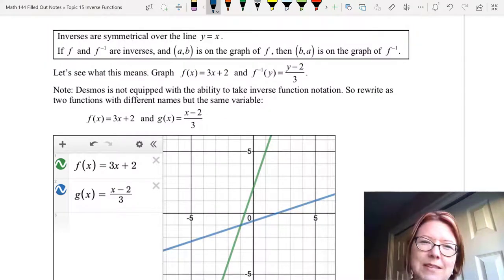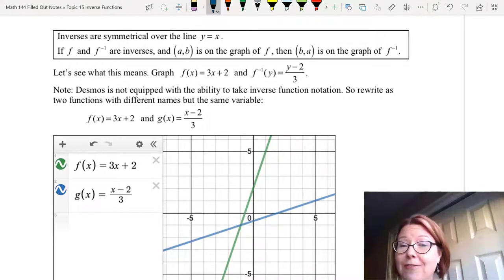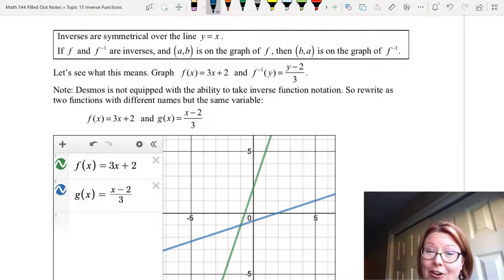Let's see what this means. We're going to graph f(x) = 3x + 2 and f inverse of y equals (y - 2)/3. These two functions are inverses of each other. Desmos is not equipped with the ability to take inverse function notation, so we need to rewrite inverse function notation as two functions with different names but the same variable.